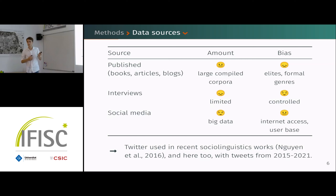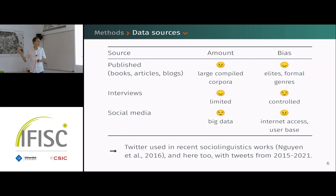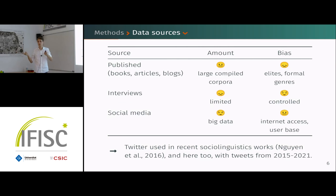However, published content is usually very highly biased, because the people who write books, articles, and blogs are mostly part of the elites. This is starting to be less true, but still mostly the case, and there are formal registers there — so you don't have the most natural speech production that you want to observe.